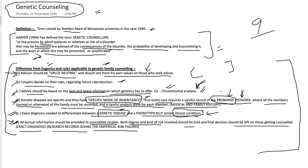Key terms to remember include: proband, pedigree, specific mode of inheritance, genetic disease, phenotypically similar clinical condition, exact diagnosis, value neutral, and genetic counseling. These are the highlighted keywords you should use in your answers.